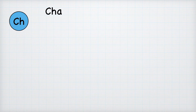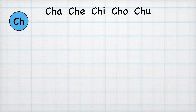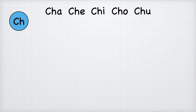When we combine this letter with the vowels they sound like: cha, che, chi, cho, chu. Let's say them again: cha, che, chi, cho, chu.